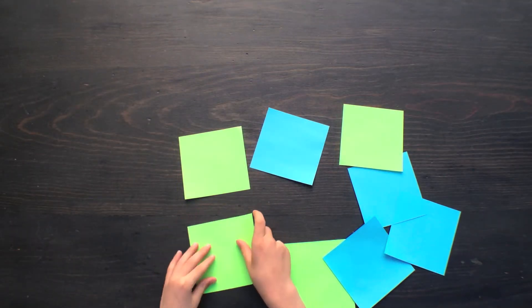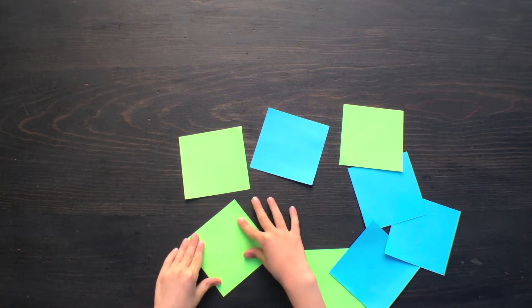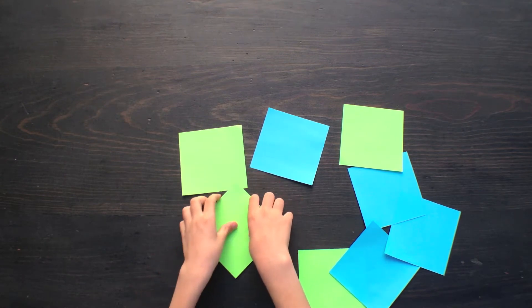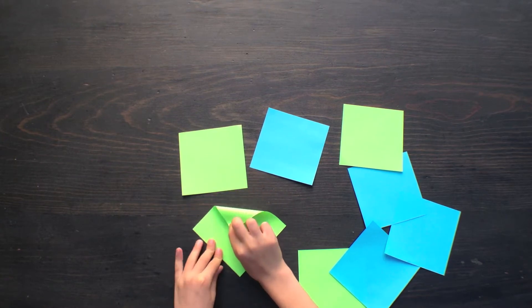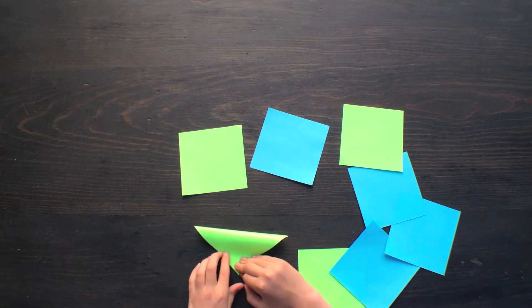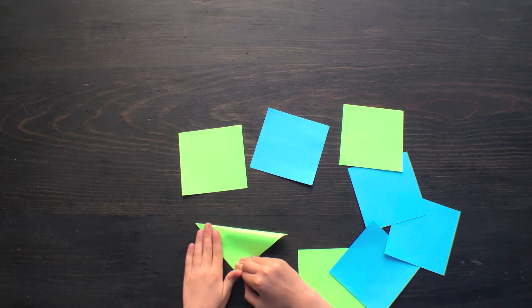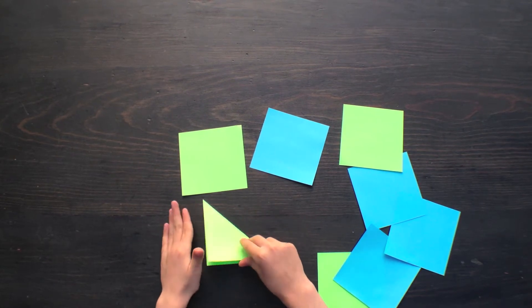First, take one and make it like this so it's a diamond. Take the top corner and fold it down to the bottom corner. Crease it and unfold it.